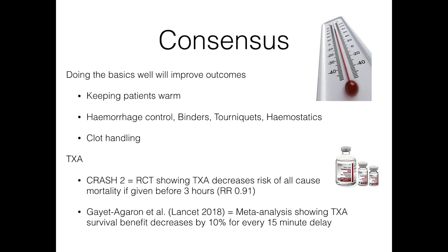Finally, TXA — tranexamic acid — will be the focus of another upcoming session, particularly with the CRASH-3 results recently released. But briefly, CRASH-2 was an RCT showing that tranexamic acid decreases the risk of all-cause mortality if given within three hours in a major trauma patient with active or at-risk bleeding. A recent meta-analysis in The Lancet showed that the survival benefit from TXA decreases by 10% for every 15-minute delay from point of injury. So: give TXA early, have a low threshold for giving it — it saves lives.